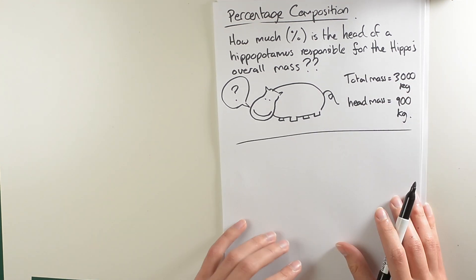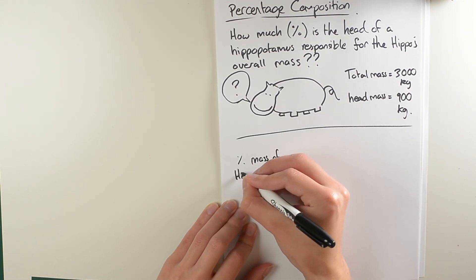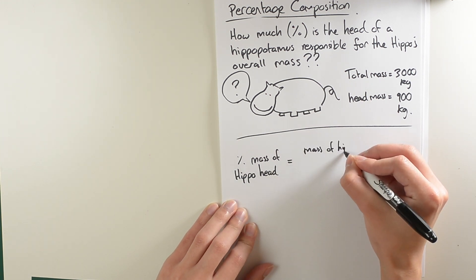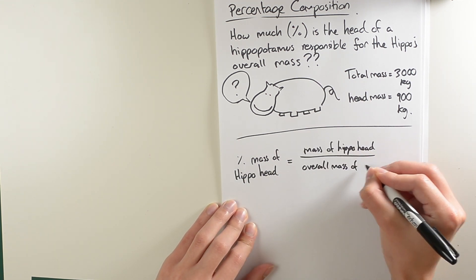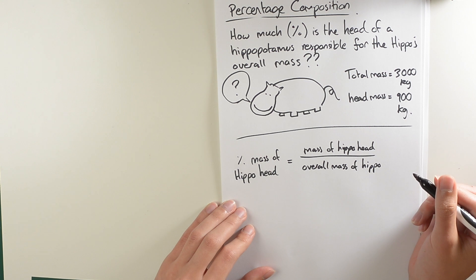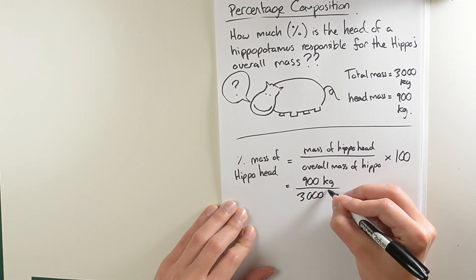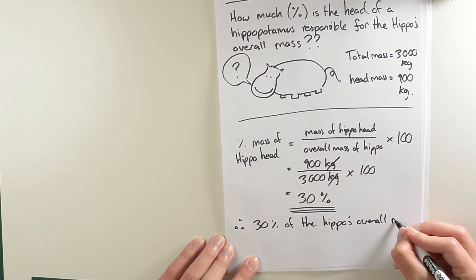But Mr. Bowman you might say, that's really easy. Why don't you just divide 900 kilos by 3,000 kilos? Ah, don't forget to multiply your answer by 100 to make sure that you are in the unit of percent.